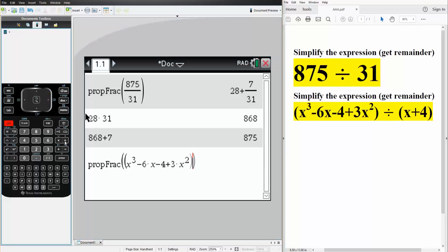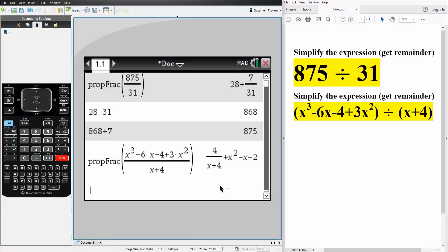So control division, we have x plus 4 and we hit enter. And this is the final answer, x squared minus x minus 2 plus 4 divided by x plus 4.